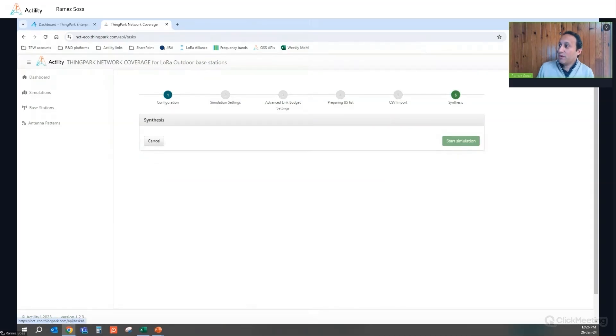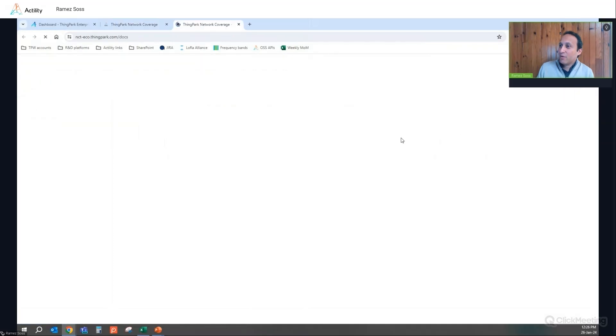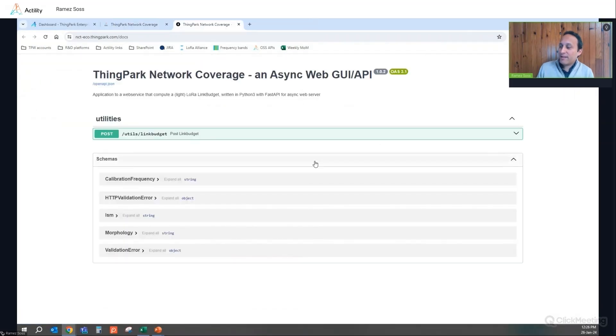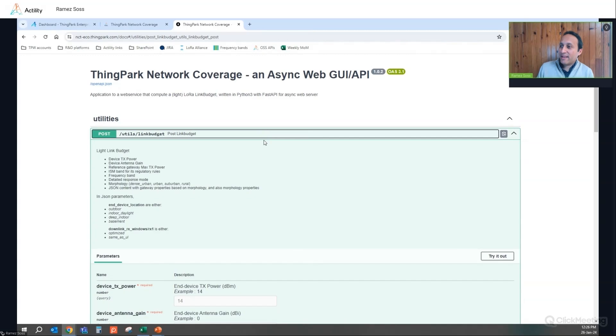And if you want to do pure link budget analysis, so you can rely on the Swagger interface so that you can access this link budget API and do your link budget assessment in a way that is very similar to the air interface dimensioning tool that was just described before.